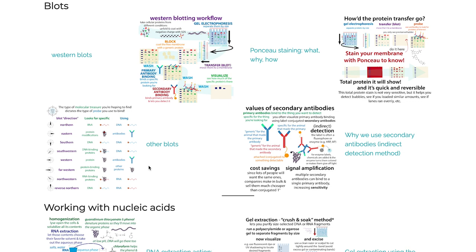We can use different types of blots depending on what type of molecule we're looking for. In a Western blot, we use antibodies to detect the protein of interest on the membrane. Often we use a primary antibody that binds to our protein of interest, and then a secondary antibody that binds to that primary antibody and allows us to detect it — either with a fluorophore or conjugated to an enzyme like HRP, which makes a chemical turn colored or give off light. We use secondary antibodies for signal amplification and cost savings.